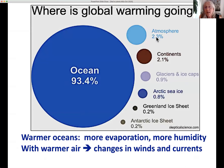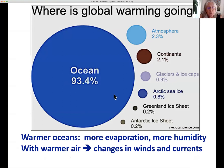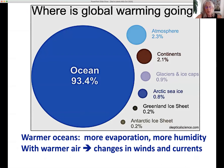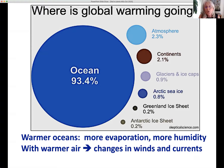Where is global warming going? It's not all staying in the atmosphere — it would be really, really hot if it did. Most of it has been absorbed by the oceans, and all that extra heat in the ocean is really one of the main drivers of all the changes we're seeing. Warmer oceans mean more evaporation of seawater, which means more water vapor going into the air. Warmer air holds more water vapor, so it's more humid — maybe five to seven percent more water vapor now than in the 1950s. Together, warmer oceans and warmer air produce global changes in winds. The polar vortex in winter is one such change caused by climate change, and ocean currents are changing too.